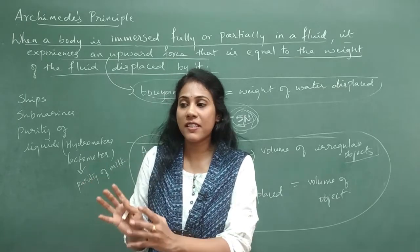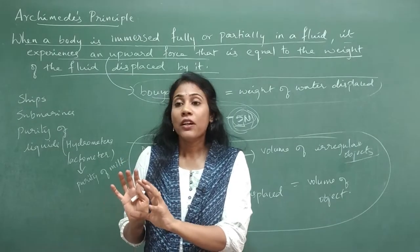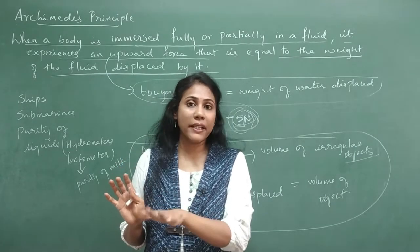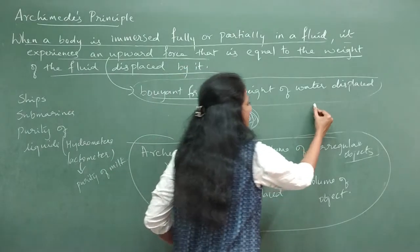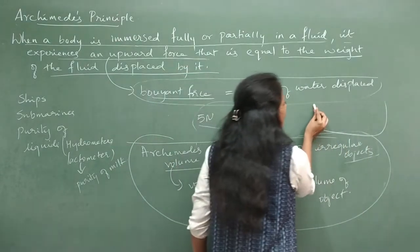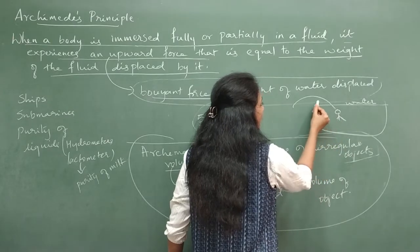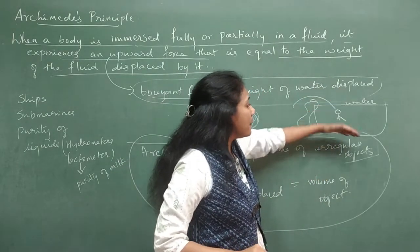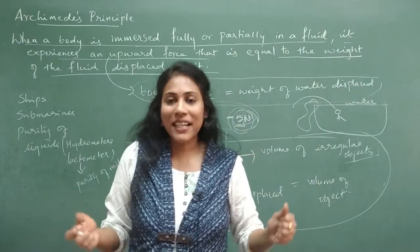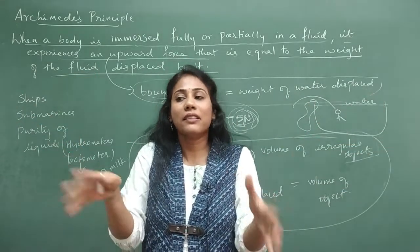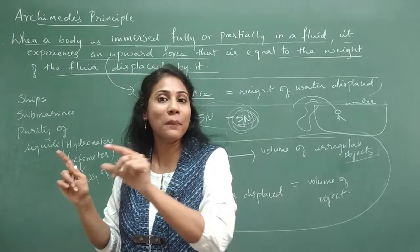The king called Archimedes and said: here is the crown and the amount of gold I gave — find out its purity without breaking the crown. Archimedes was thinking about how to find this out. Then, when Archimedes got into a bathtub full of water, the water spilled outside. As he went deeper, more water fell out — and at that moment he got the idea to solve the king's problem.